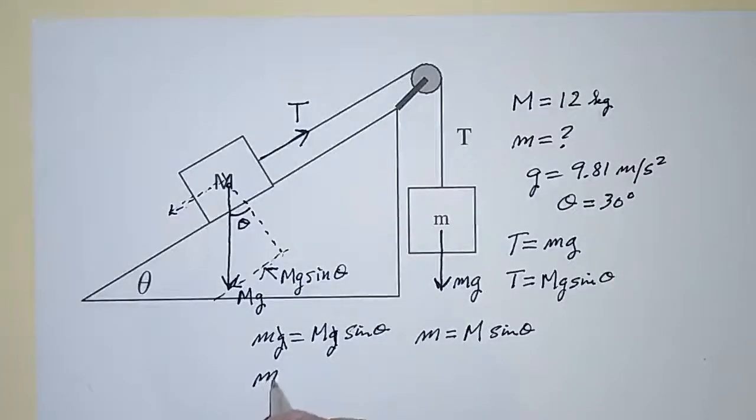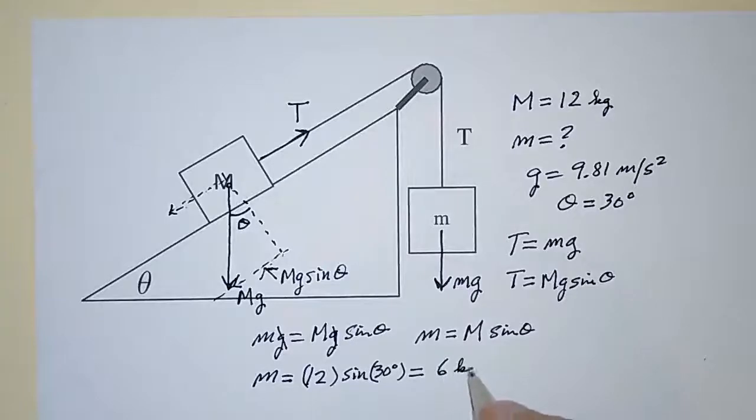So m, then, is equal to M times sine 30, which is 12 kilograms, times the sine of 30 degrees, which is 1 half. So this is equal to 6 kilograms. And that's the answer.